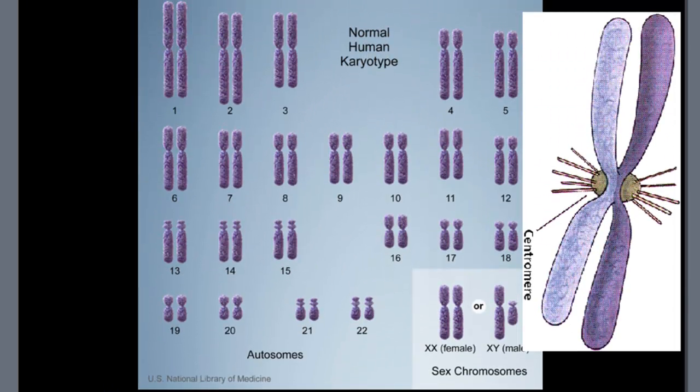This is a normal karyotype of a human, where we have 23 pair of chromosomes, 22 what are called autosomal chromosomes, and then one pair, either two X's or an X and a Y like this, which are called the sex chromosomes. Two X's give you female, and an X and a Y gives you a male. But this is a normal set of human karyotype.